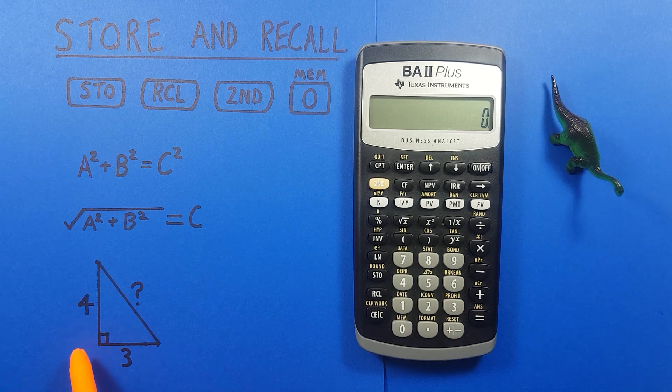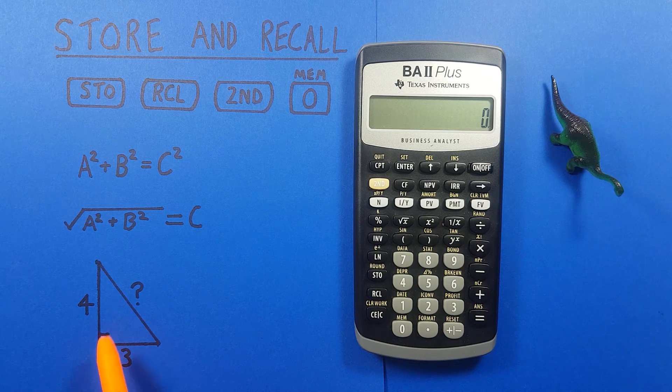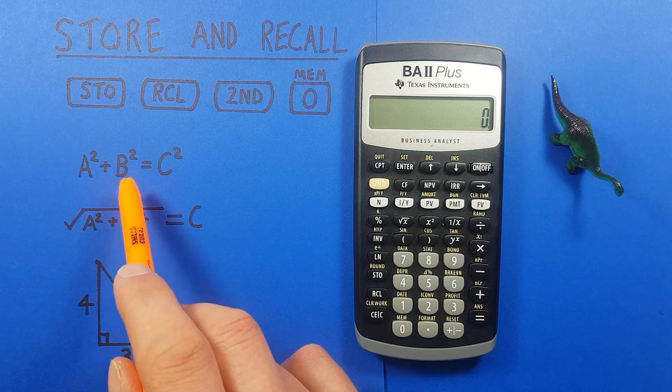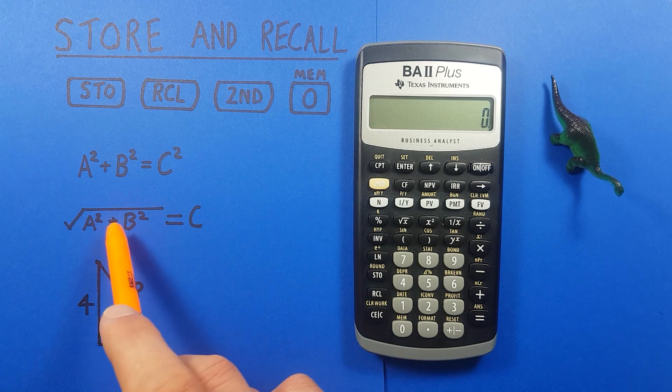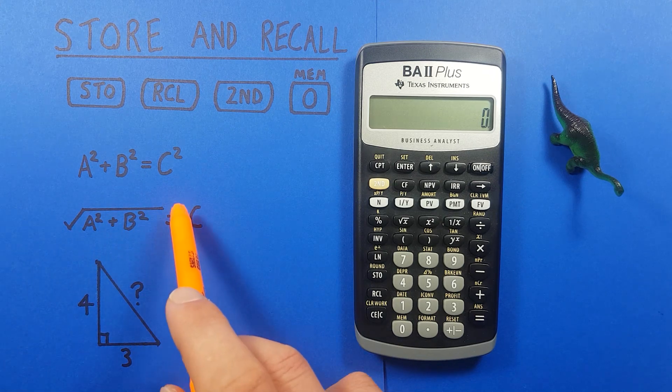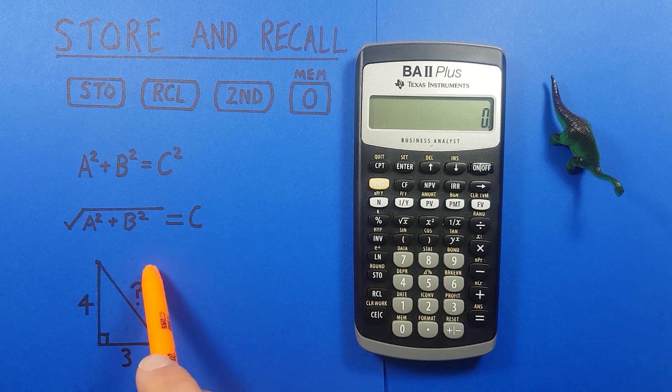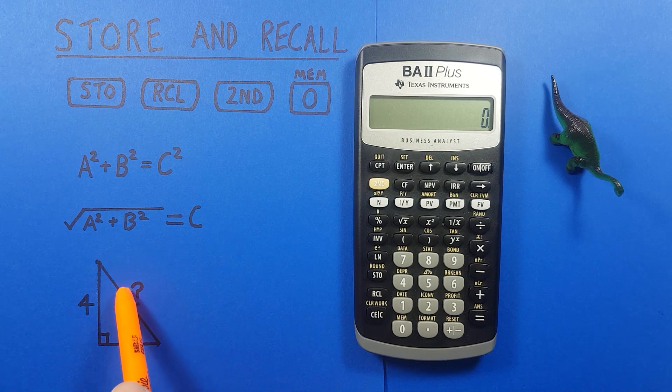For example, if we wanted to solve this right angle triangle. And we know that a squared plus b squared equals c squared. And can be rewritten as the square root of a squared plus b squared equals c. And we want to solve for our c unknown side.